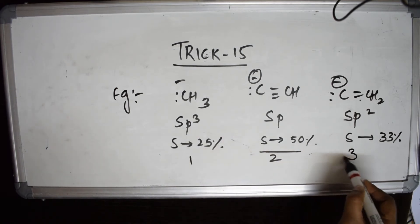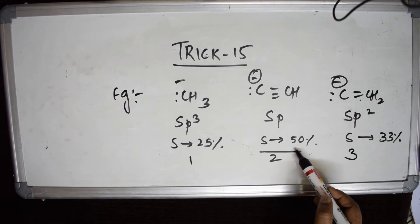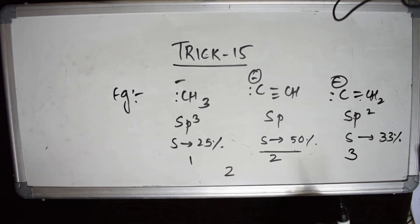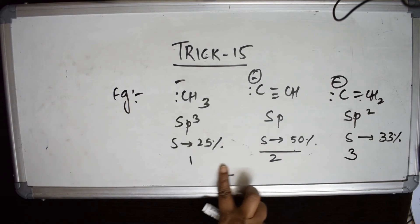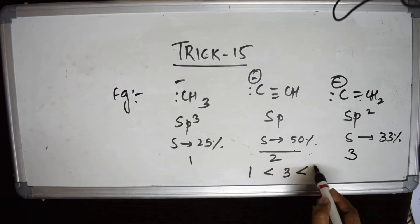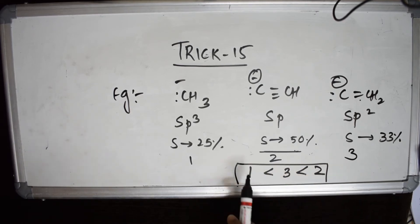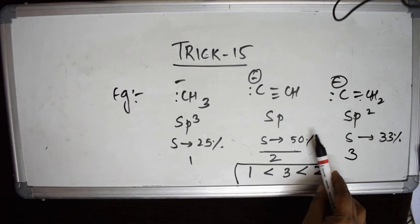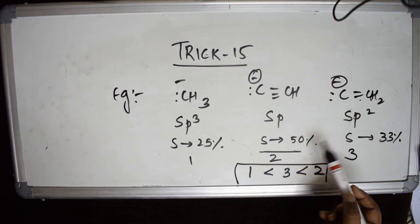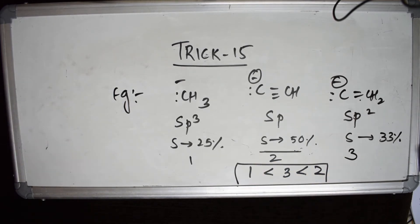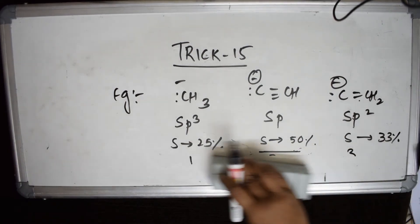According to the trick, more s-character means more stability of the anion. So the order is: sp³ (single bond) is least stable, then sp² (double bond), and sp (triple bond) has the maximum s-character so it is most stable. The triple bond anion is most stable, then double bond, then single bond.